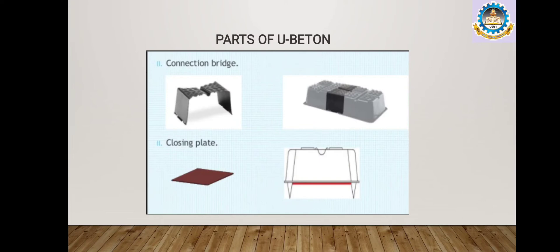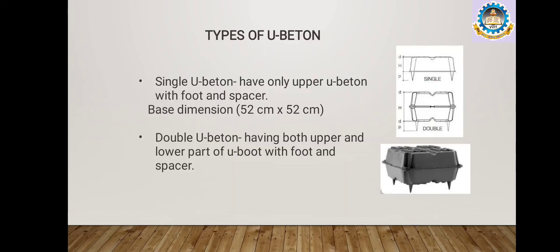The spacer joint helps to maintain the rigid connection between the parts. The closing plate is used to close the U-boot Beton box, which resists the flow of concrete into the box. The closing plate has a major role in the quality of the slab. The connection bridge is necessary to join two betons longitudinally wherever the length of the beton needs to be increased.